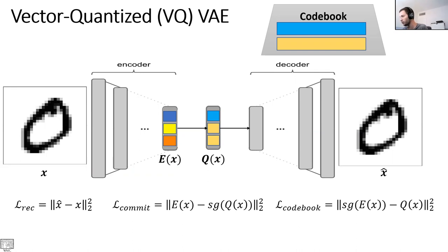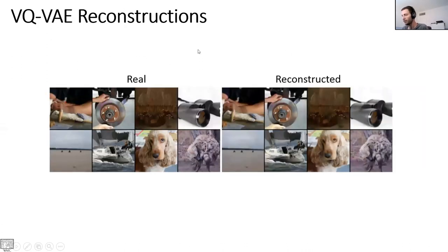Finally, we have the codebook loss, which goes in the other direction: we stop the gradient for the encoder and just backpropagate to update the codebook words. Looking at VQVAE reconstructions: on the left are images inserted to the encoder, on the right are images reconstructed by the decoder. It looks better than what we saw with variational autoencoder — still a bit blurry, but much better.